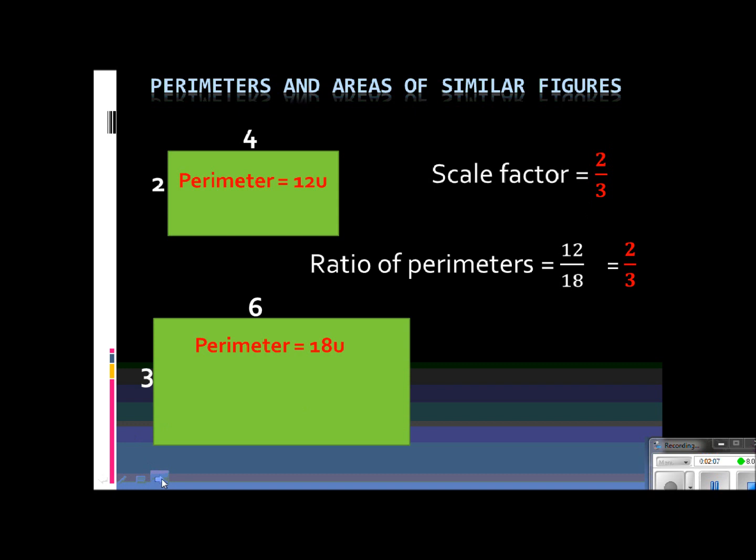And now, let's take a look at the areas. If we were to calculate the area of the small rectangle, 2 times 4 is just 8, 8 units squared. And then if we were to take a look at the larger one, 3 times 6 is 18. So the area of the larger one is 18 units squared.